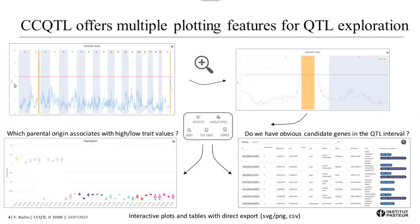Another key feature of CCQTL is that it offers a breadth of visualizations to further explore QTL mapping results. You can of course explore the LOD profile by zooming in and out, but you can also ask which parental origin associates with high or low trait values, or what genes are in the QTL interval — do we have any obvious candidate for the trait of interest? To help answer these questions, we provide several interactive plots and tables which can also be exported, for instance to fill in the lab notebook.